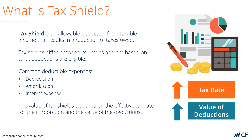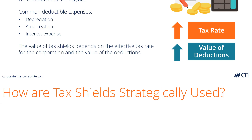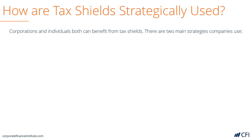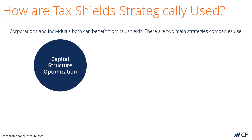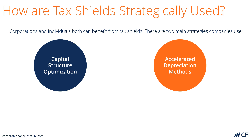Now let's look at how tax shields are used. Companies use them in two main areas: one is for capital structure optimization, and the other is accelerated depreciation methods.